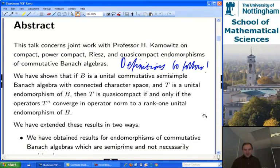So what is the definitive result that I've got with Herb on compact endomorphisms of semi-simple commutative Banach algebras, and quasi-compact? The nice thing about this one is it's an if and only if, whereas some of the earlier results that Herb got on compact endomorphisms weren't if and only if. This one is a proper characterization of quasi-compact endomorphisms. Particularly looking at the case where you've got connected character space, that's just to make sure there's no non-trivial idempotents, then an algebra endomorphism of your commutative semi-simple Banach algebra is quasi-compact if and only if the powers of the operator actually converge in operator norm to a rank one unital endomorphism. So that's pretty strong.